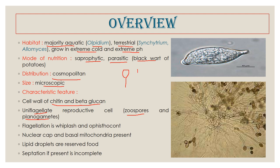In Hyphochytridiomycetes they have an anteriorly placed flagellum. In Oomycetes they have two flagella of different size and different type. So based on the position of insertion of flagella, the number of flagella, and the type of flagella, lower fungi have been categorized. The characteristic feature of Chytridiomycetes is that they have uniflagellate reproductive cells, the flagellum is whiplash type, and it is posteriorly inserted — this is called opisthokont. When a flagellum is posteriorly attached it is called opisthokont.